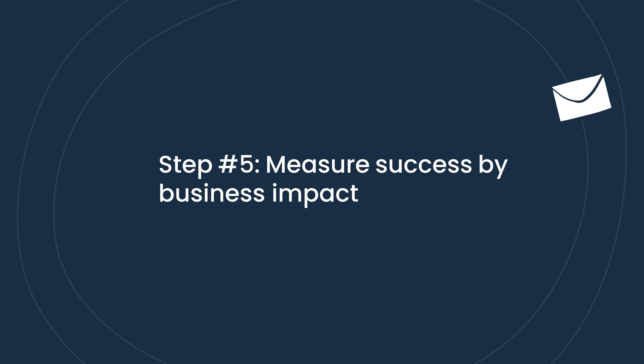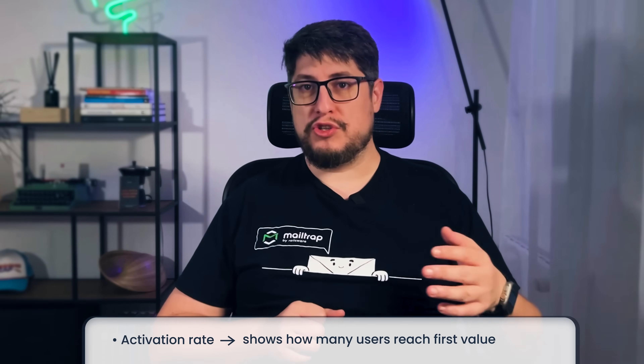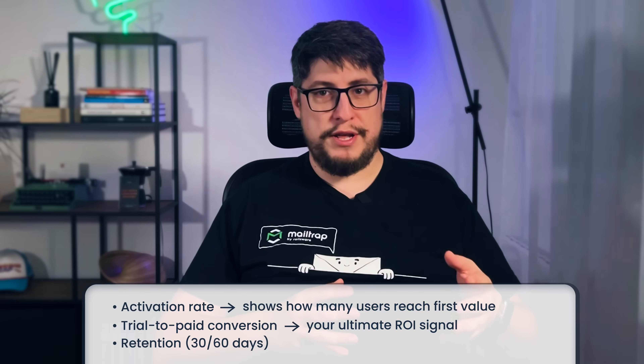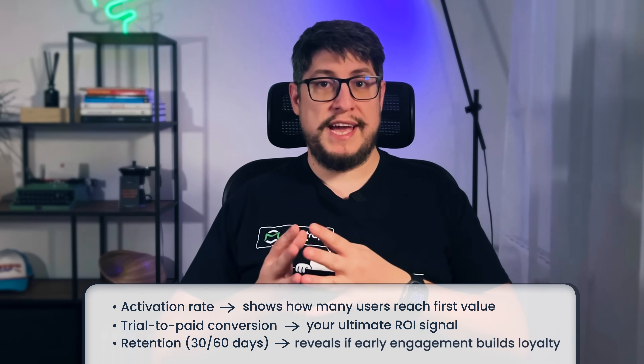Step five: measure success by business impact. Even when your onboarding system is live and running, the job isn't done. Don't waste time on vanity metrics like open rates and clicks. Instead, track how users move through the journey — who reaches value, who upgrades, who sticks around. Activation rates tell you how many users reach their first value moment. Trial-to-paid conversion is your ultimate ROI signal, and retention at 30 or 60 days determines whether early engagement leads to loyalty. Every email and every milestone should move one of these metrics.